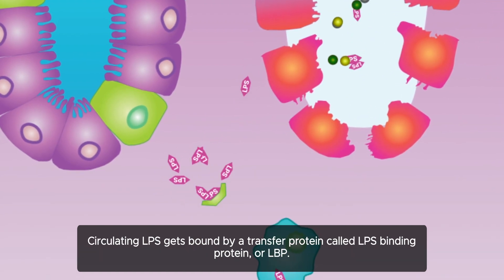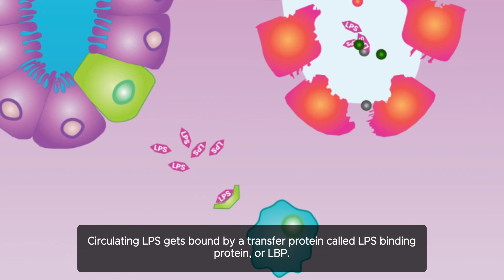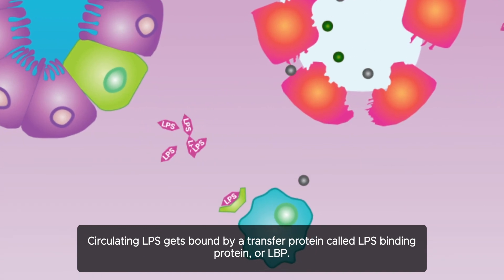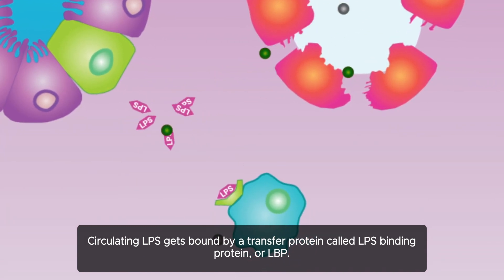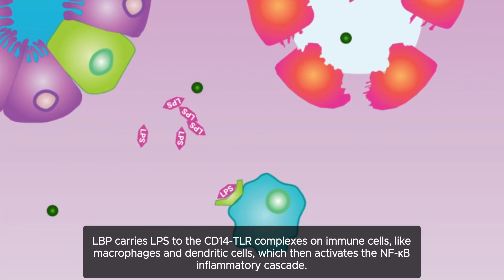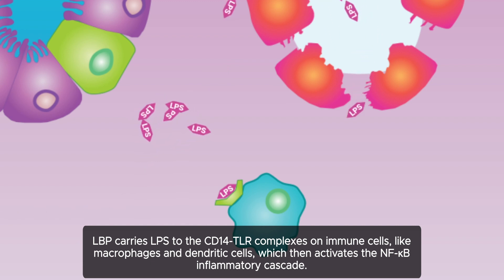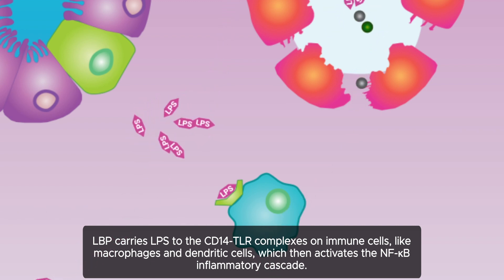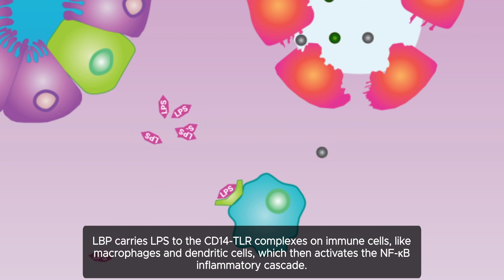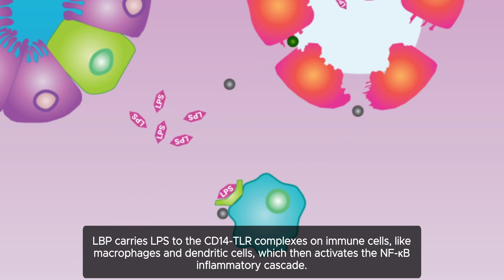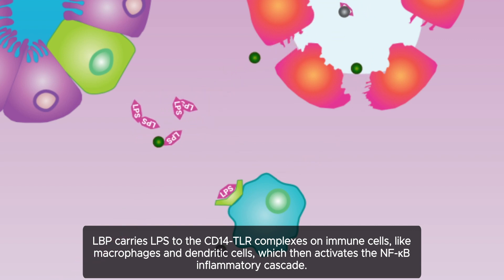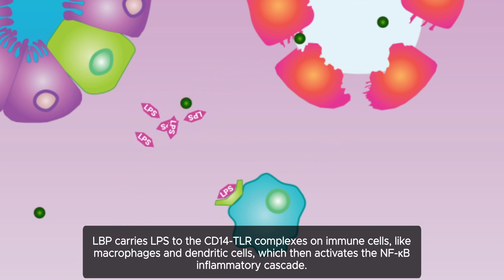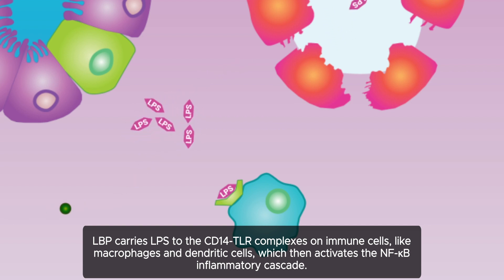Circulating LPS gets bound by a transfer protein called LPS-binding protein, or LBP. LBP carries LPS to the CD14 toll-like receptor complexes on immune cells like macrophages and dendritic cells, which then activates the NF-kappa B inflammatory cascade.